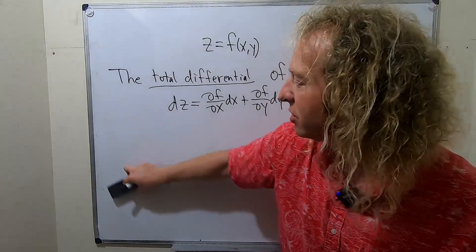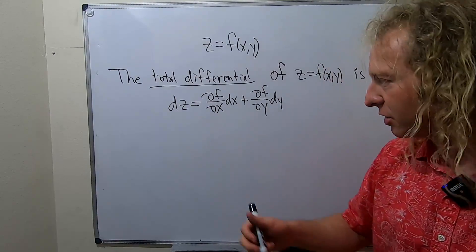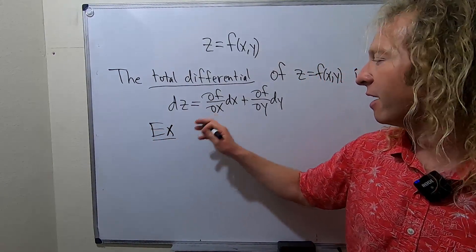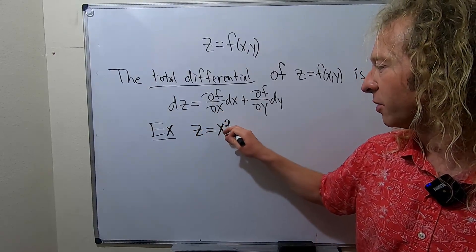For our purposes, we're just going to be focused on computing it. Let's do a simple example just so you see how it works. Let's say we have z equals x squared y squared.